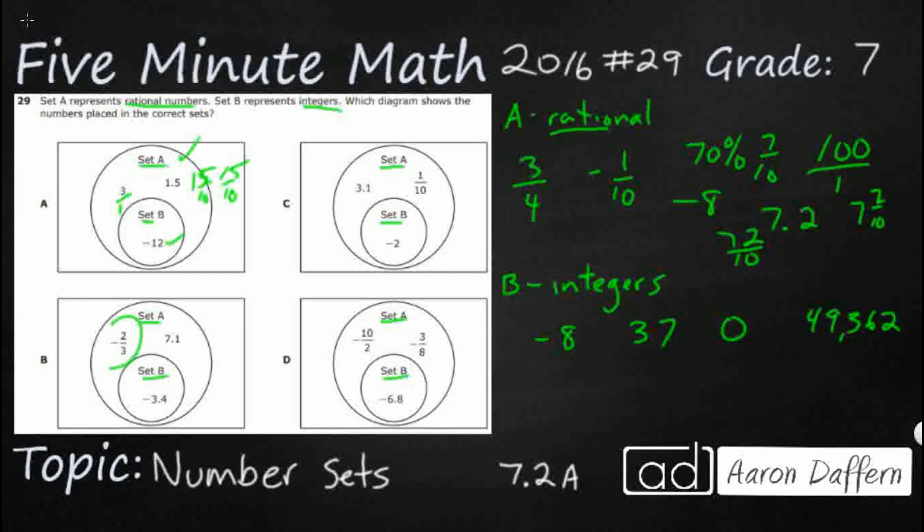So B, it already is a ratio. That's good. And 7.1, that can be turned into a fraction of 7 and one-tenth or 71 over 10. So looking good here. But look at B down on set B. We've got a decimal and we only want whole numbers that are positive or negative. So B is not going to work.